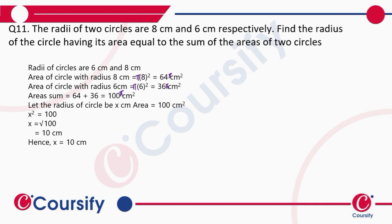100π equals 100 times 3.14, which is 314, but we'll keep it as 100π. So the area of this circle will be 100π, equal to the area of the third circle which we have to find, which will be πx².